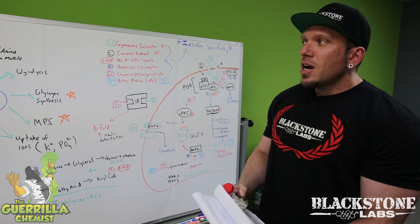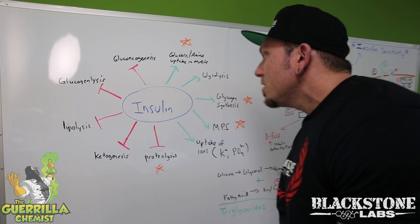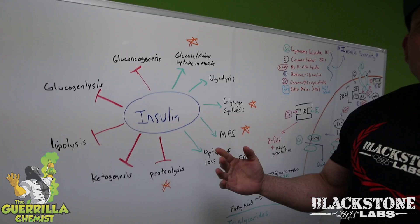First I need to go over a few terms so that you can follow along. This is going to be a little bit of science, but I think I can convey it pretty easily. So insulin is our best friend or our worst enemy — it's the most anabolic hormone in the body.